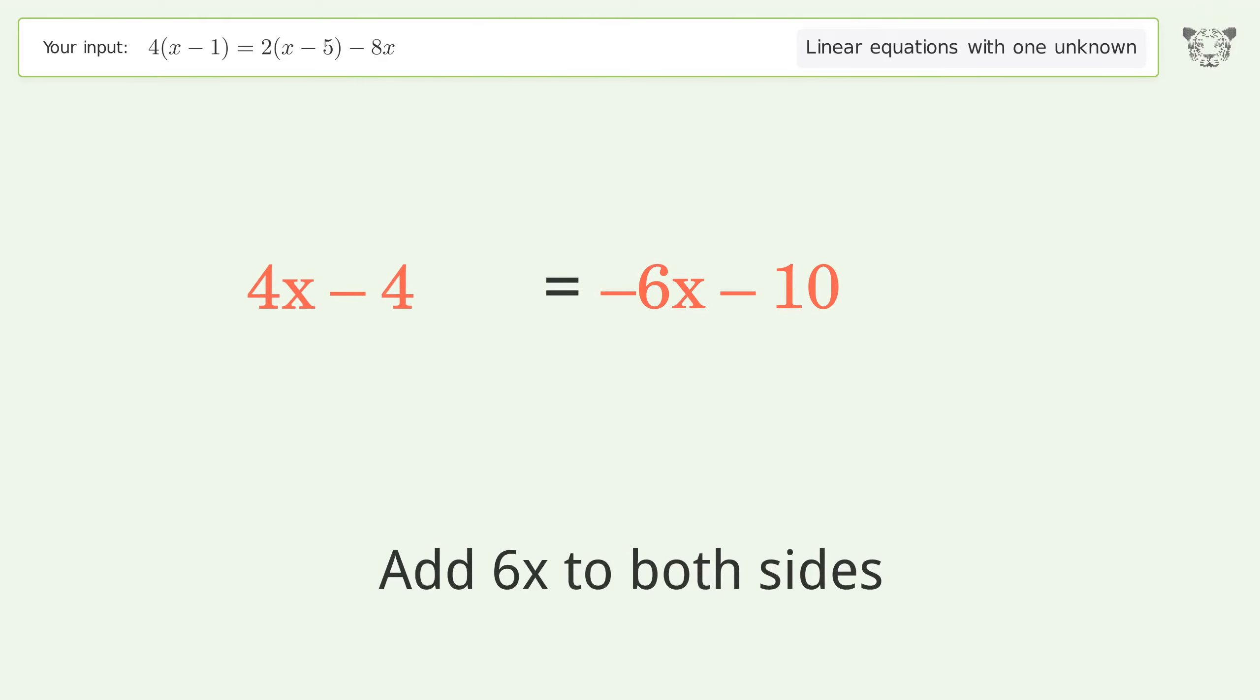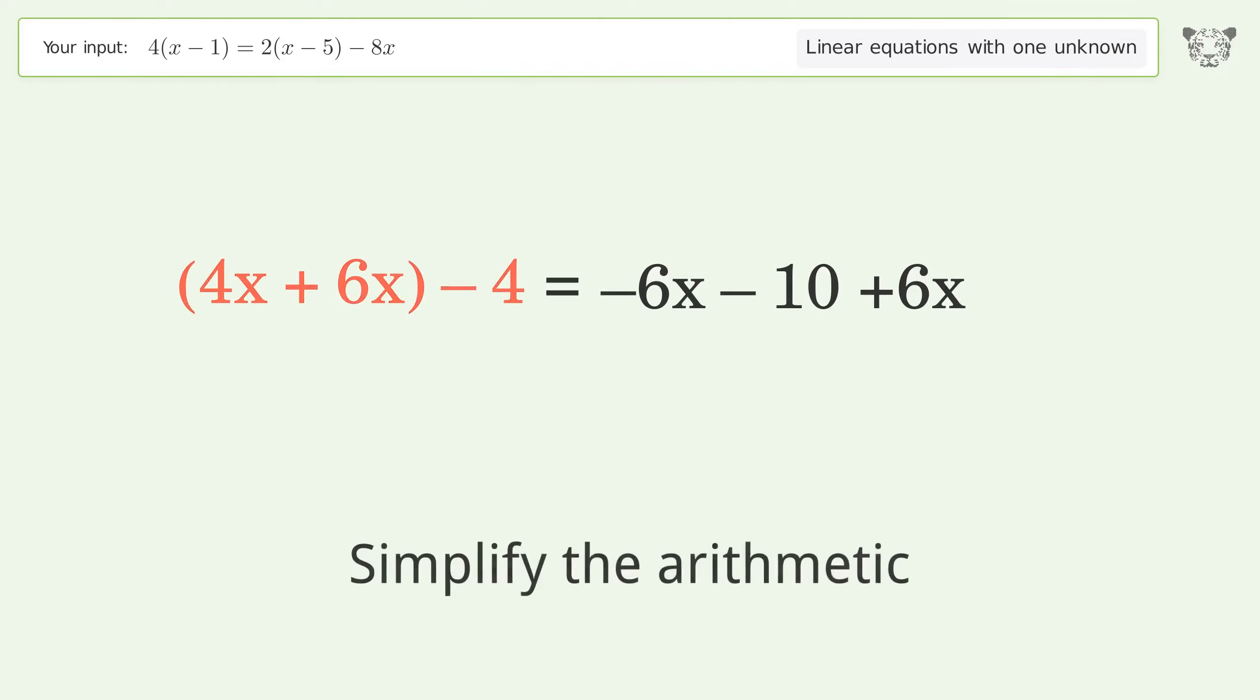Group all x terms on the left side of the equation. Add 6x to both sides. Group like terms. Simplify the arithmetic.